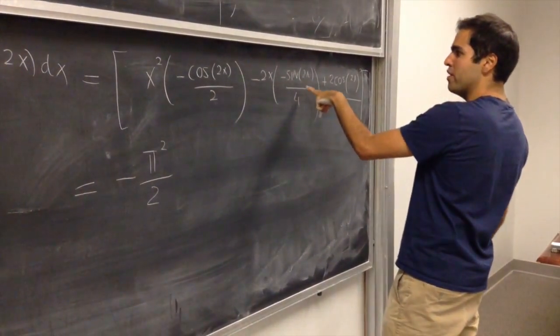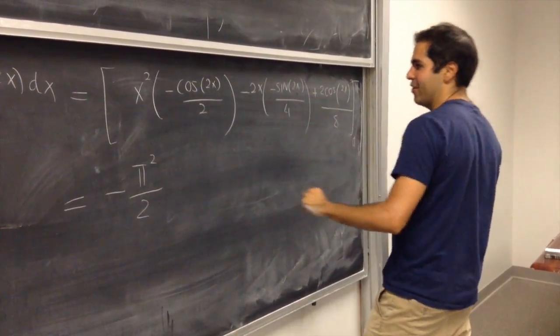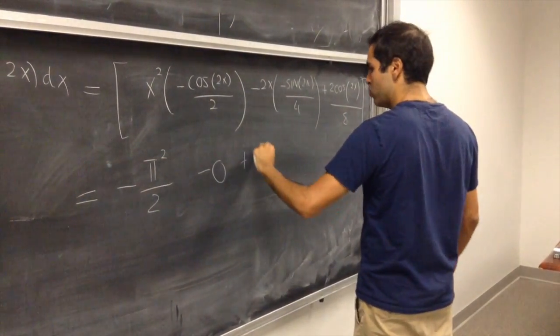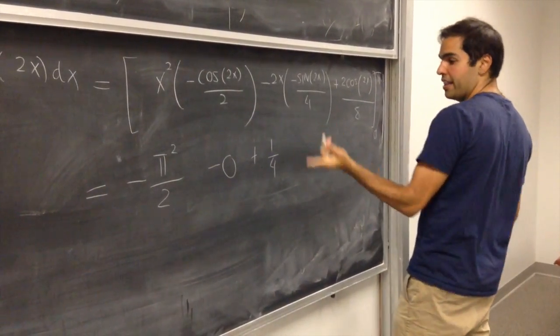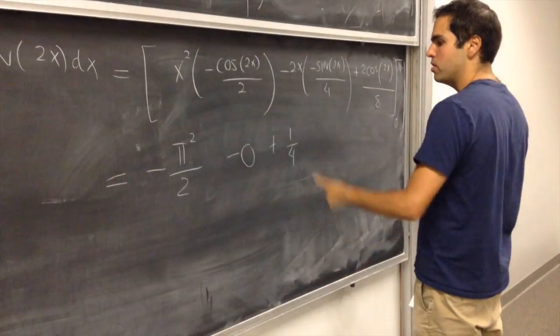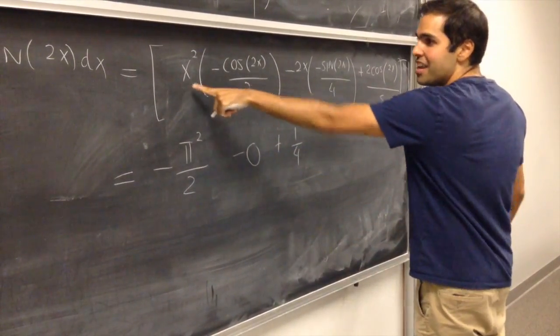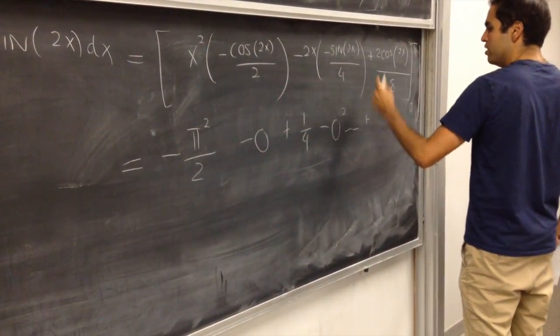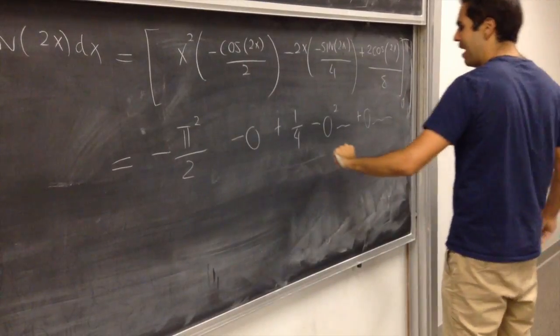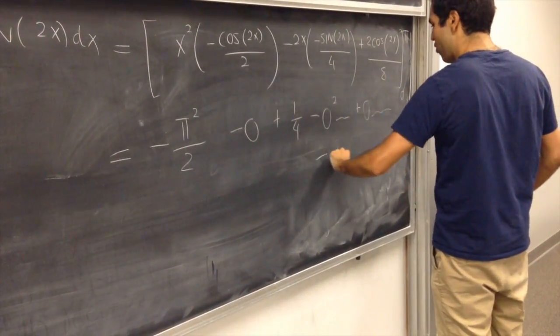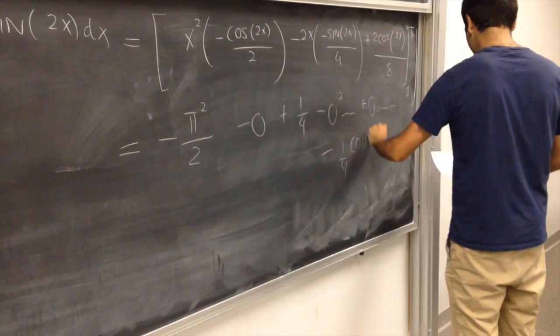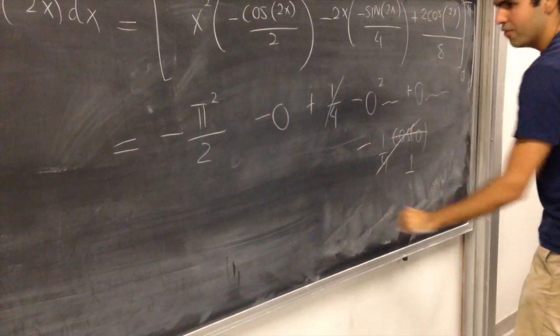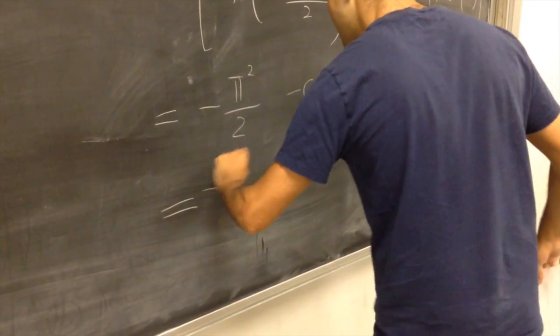Cosine of 2 pi over 2 is 1. This thing, don't even worry about it, because sine of 2 pi is 0. So, 2x times 1, cosine of 2 pi over 4, that's 1 fourth. So, minus pi squared over 2 plus 1 fourth. And notice the cool thing here, you have minus 0 squared times blah, plus 2 times 0 times blah, and then minus, so I get 1 fourth cosine of 0, which is 1, and those 1 fourth and 1 fourth cancel out, and you're left with minus pi squared over 2.